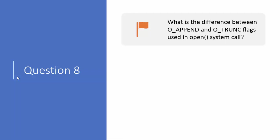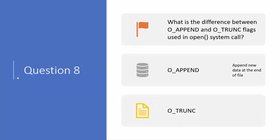Question number eight: what is the difference between the O_APPEND and O_TRUNCATE flags used with the open system call? O_APPEND allows you to append data to the existing content of the file. If you open a file and there is already some existing data that you don't want to override, use the O_APPEND flag — it appends new data to the end of the file. O_TRUNCATE, on the other hand, deletes and clears the existing data before writing new content.